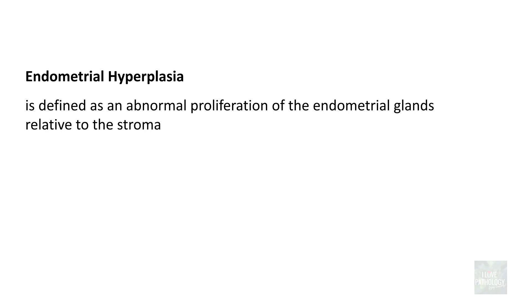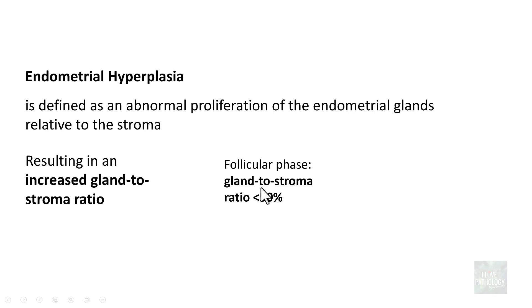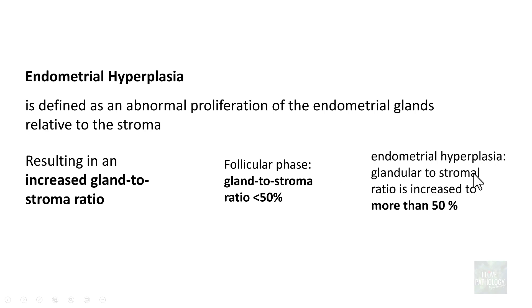Endometrial hyperplasia is defined as an abnormal proliferation of endometrial glands relative to the stroma. It is the proliferation of glands alone relative to the stroma, which results in an increase in gland-to-stroma ratio. The normal gland-to-stroma ratio in the follicular phase is less than 50%, whereas in endometrial hyperplasia the glandular-to-stromal ratio is increased to more than 50%.